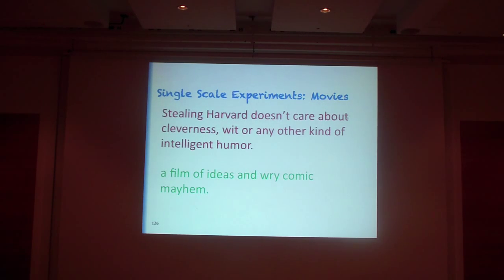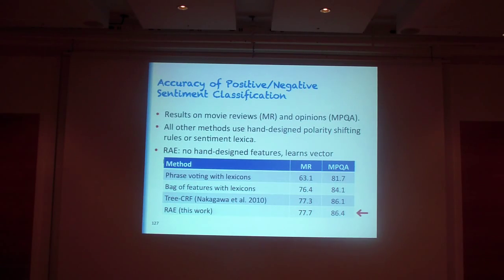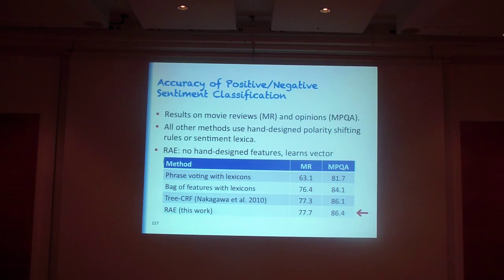The phrase 'a film of ideas of our iconic medium' should be classified as positive. We look at the movie reviews dataset and another standard dataset, the MPQA one for opinions, and compare to a method that used hand-designed polarity-shifting rules and sentiment lexica. In contrast, our recursive autoencoder used only the input sentences and labels, with no hand-designed features, and it actually achieves state-of-the-art performance on these two datasets.